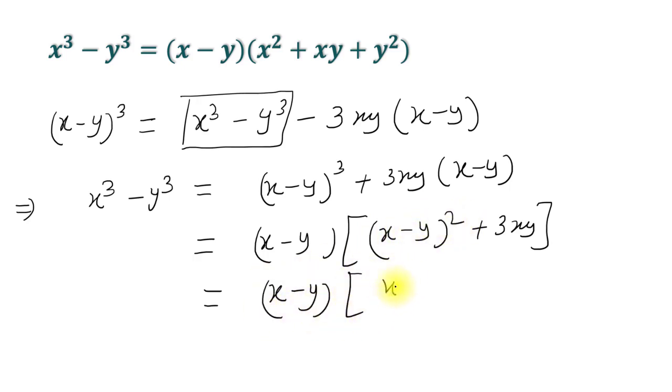Further we can write this is equal to (x - y)(x² and negative 2xy plus 3xy is equal to positive xy, plus y²).